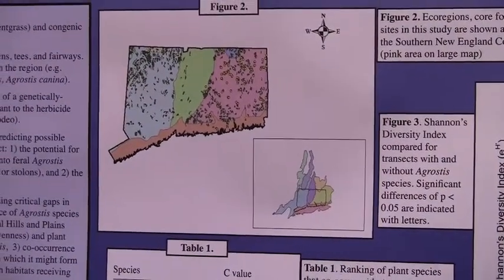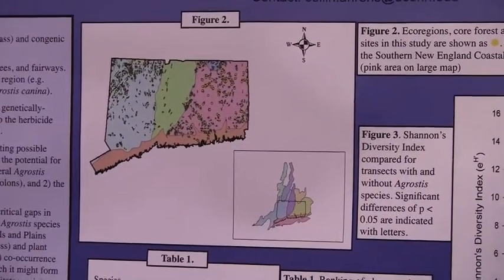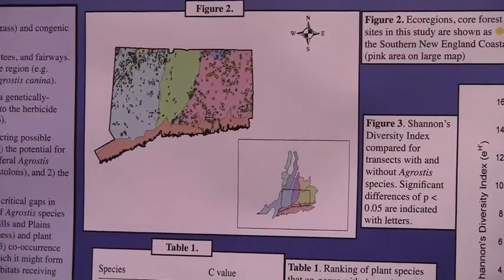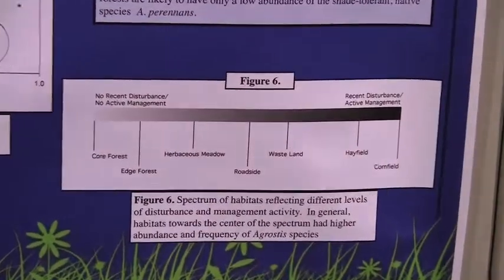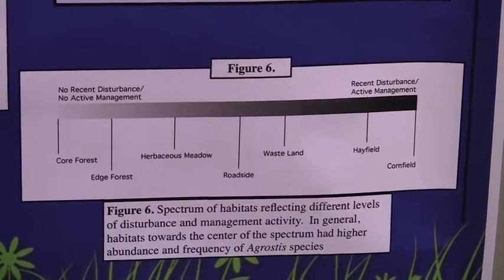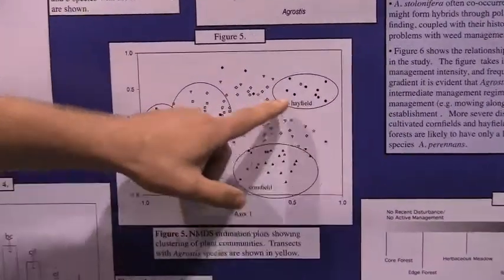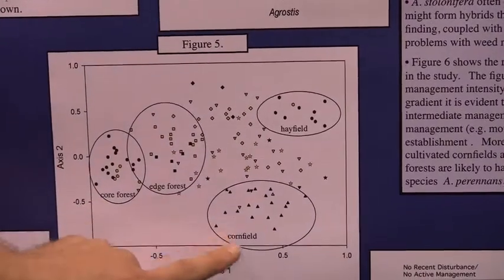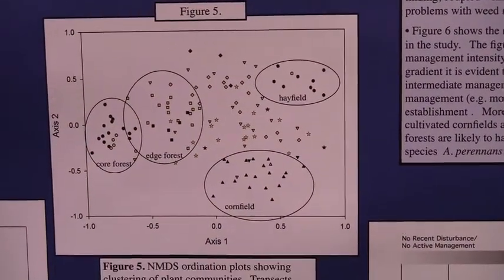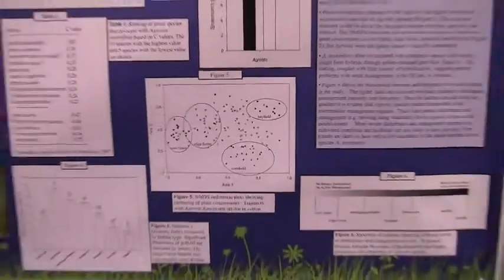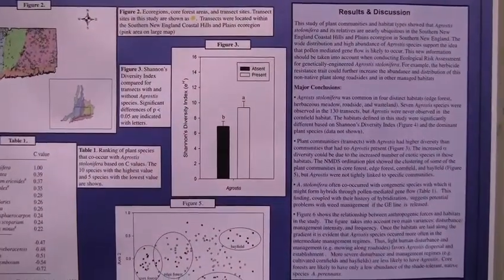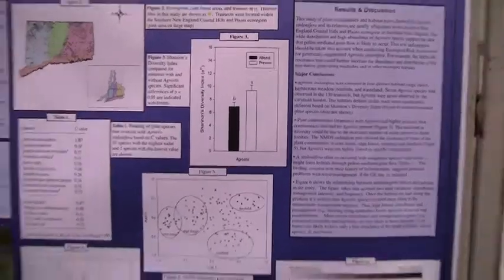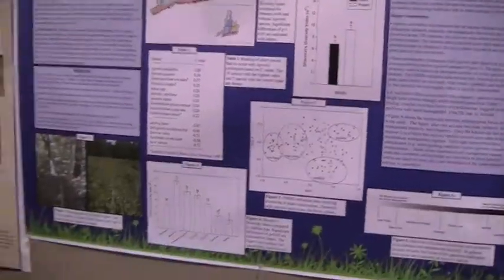What we found was that Agrostis normally occurs in intermediate management sites like herbaceous meadow, roadside, and wasteland — those are the most common habitats for Agrostis species. In the ordination plot, we can see that Agrostis is occurring in the middle area, not in the outer sites clustered as core forest, cornfields, and hayfields. We also found that Agrostis species occur in significantly higher diversity sites, though I think that's related to the increase in exotic and invasive species, which increases alpha diversity — so local diversity is increased at these sites.